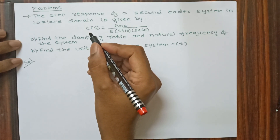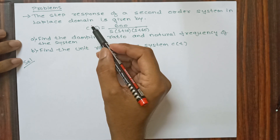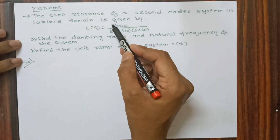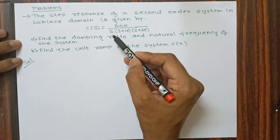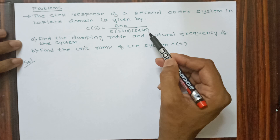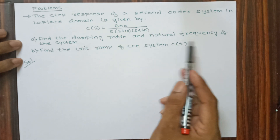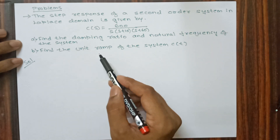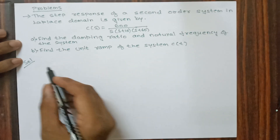Hello friends, welcome to ACE Tutorials. Today we are going to solve some problems on second order systems. The step response of a second order system in the Laplace domain is given by C(s) = 600 divided by s(s+10)(s+60). We need to find the damping ratio and natural frequency of the system, and find the unit ramp output C(t).